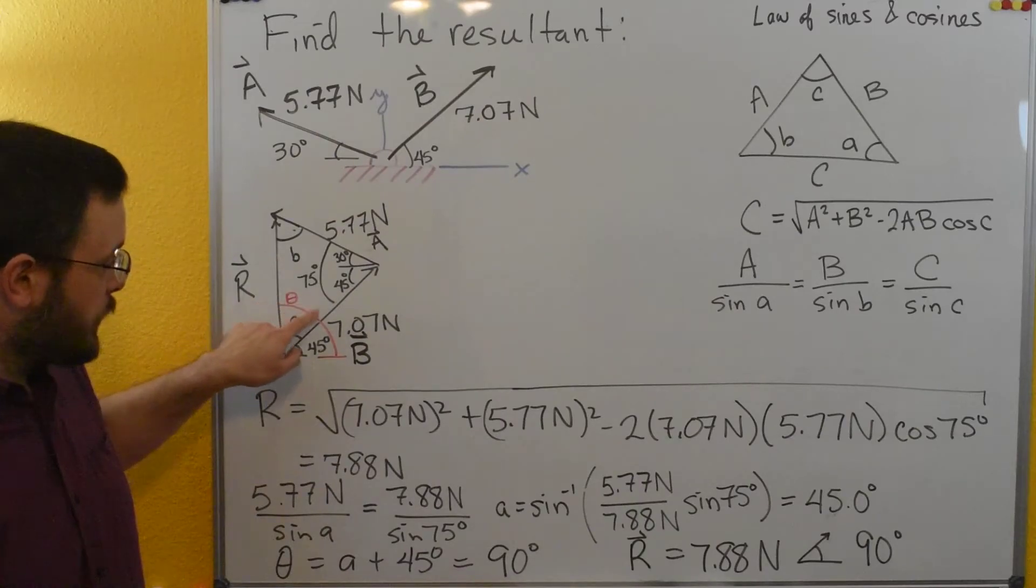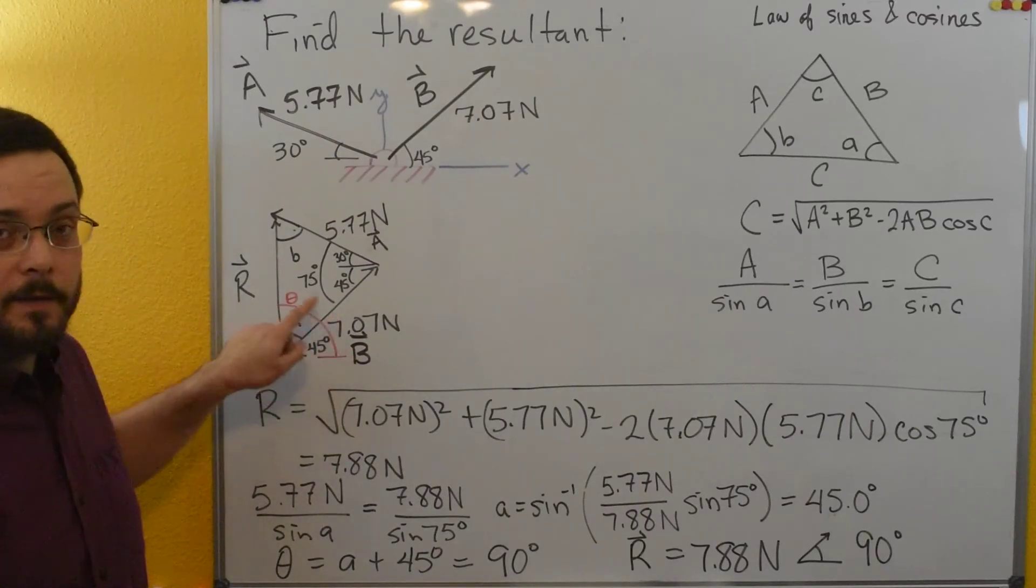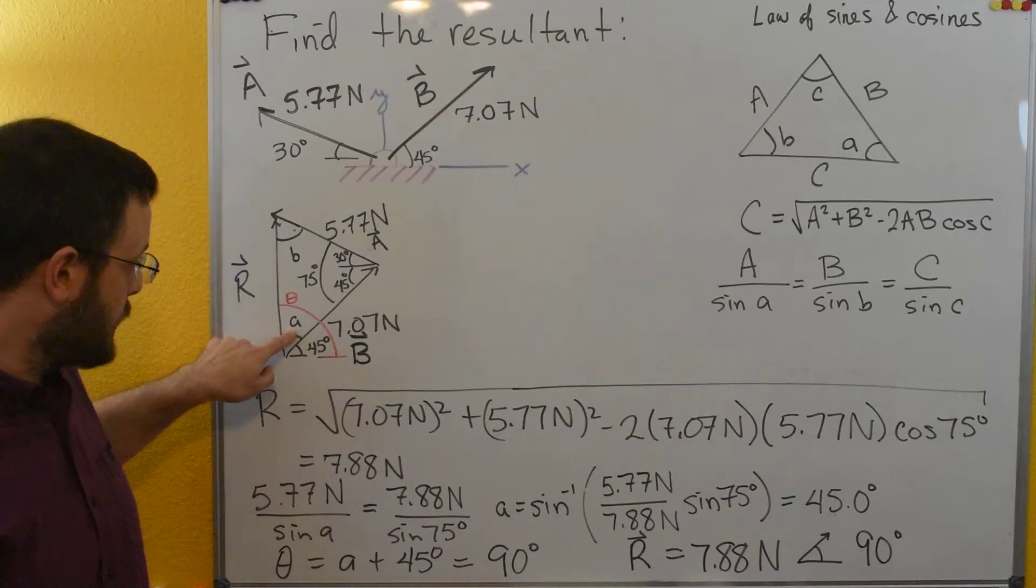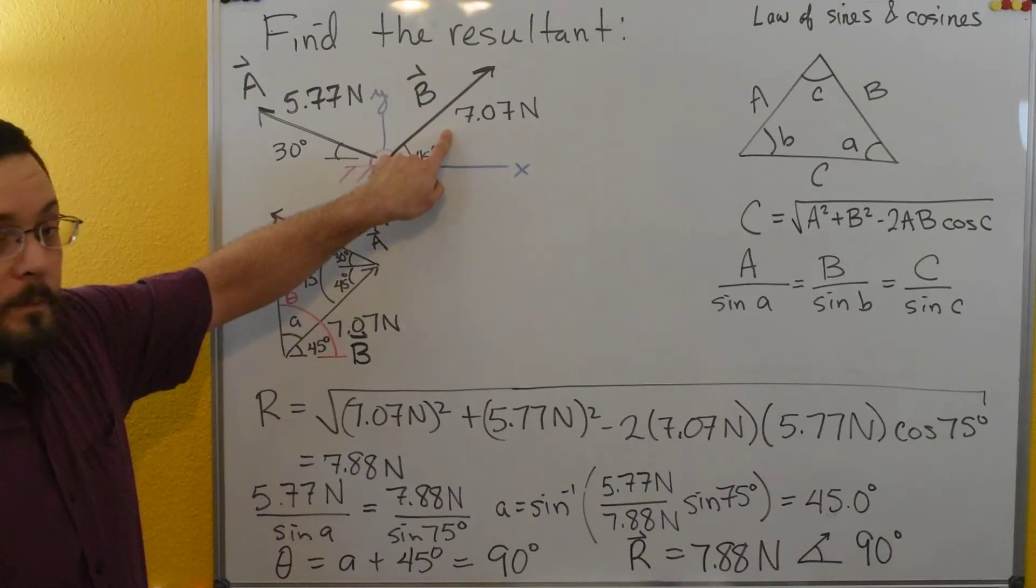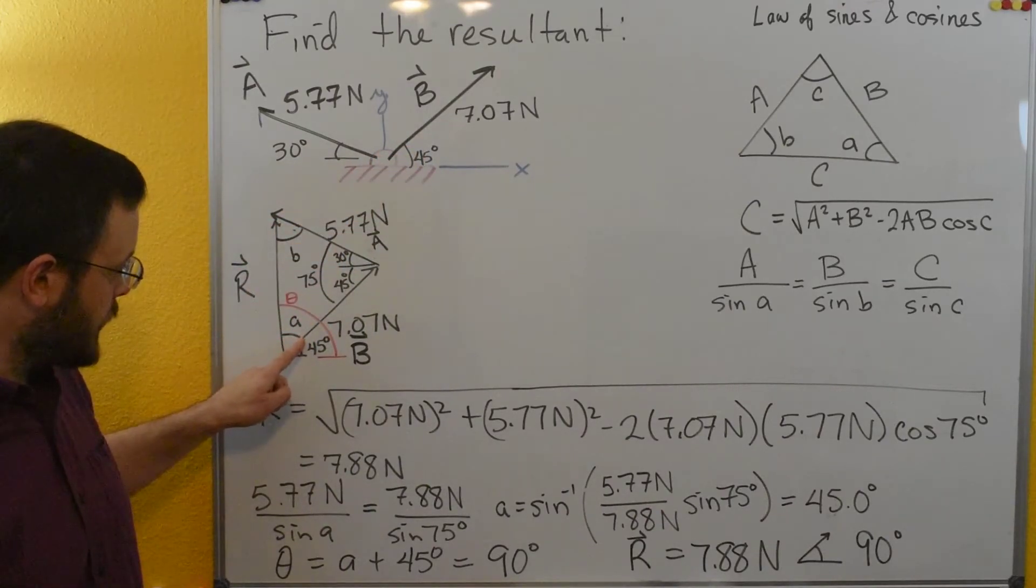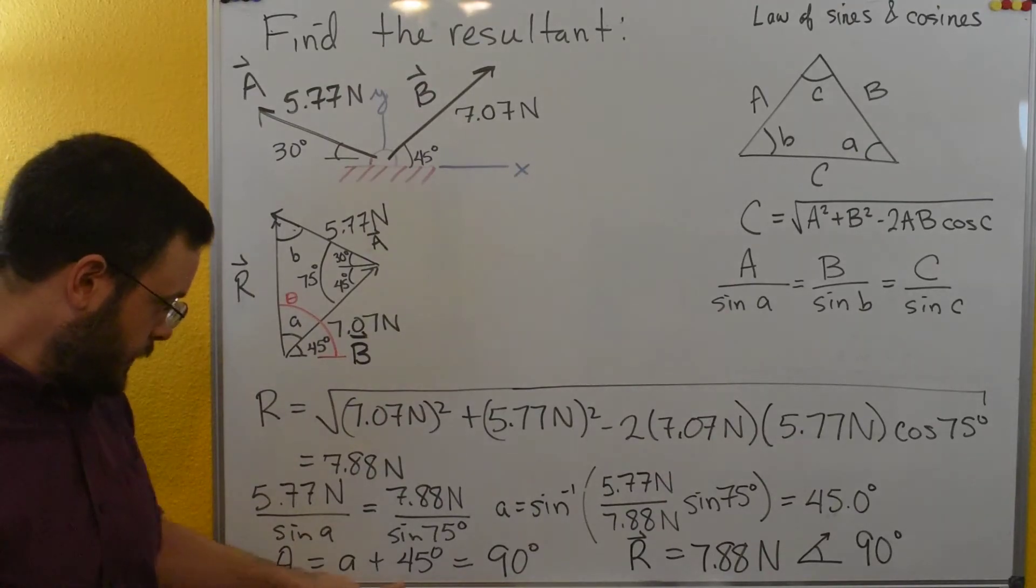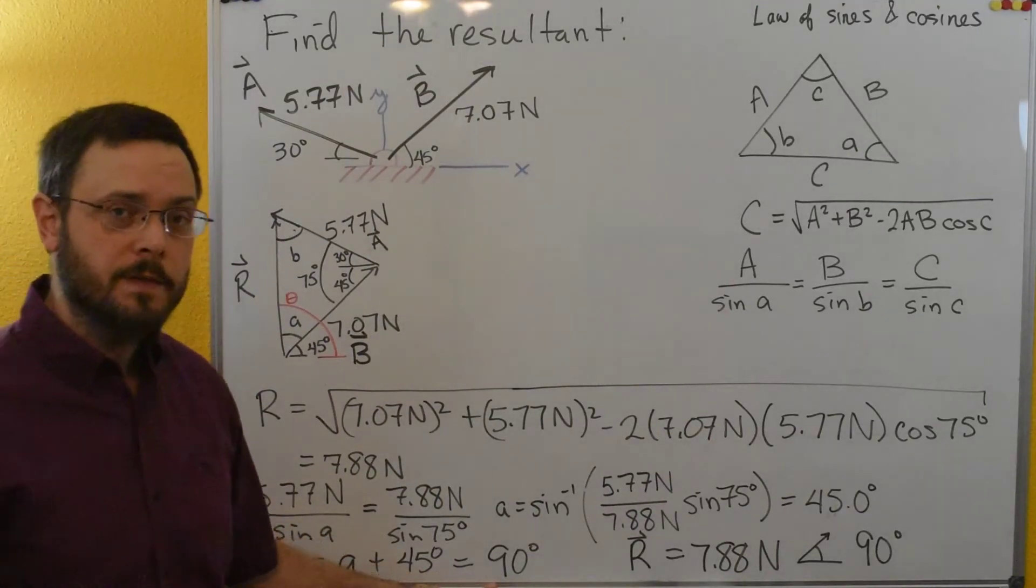Now I need this angle theta though all the way back to the x-axis. So I'm going to take the 45 that I just calculated and add the 45 for b because a is relative to vector b. So I add those two together and I get 90 degrees.